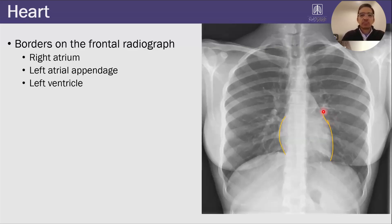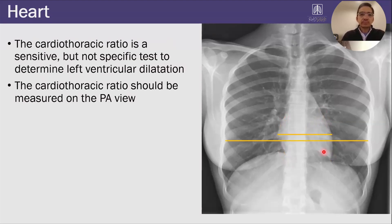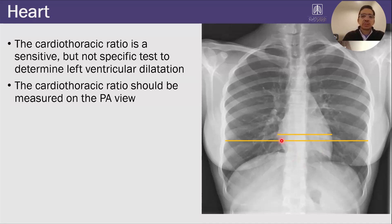And then I look at the heart. The heart borders that you see on the frontal radiograph are: right atrium on the right, and left atrial appendage and left ventricle on the left. When starting out, you want to determine the heart size, and it's helpful to look at the cardiothoracic ratio — the transverse measurement of the heart compared to the chest size. The heart should be less than 50%. It's a rough estimate — it's sensitive for left ventricular dilatation, but not very specific.